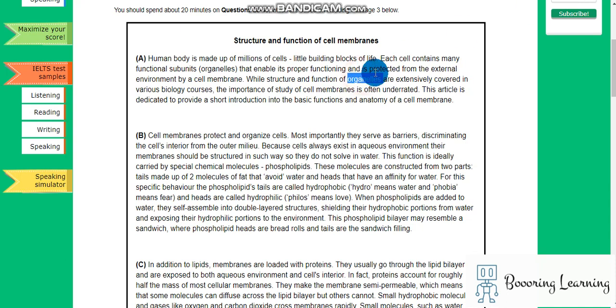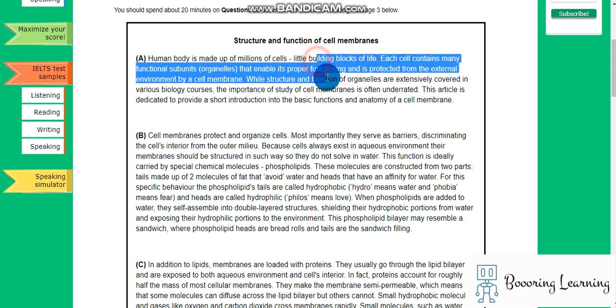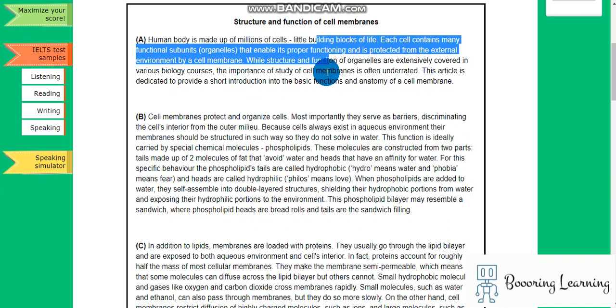Hi, hello, it is IAS academic reading section 3, structure and function of cell membranes. I love biology. The human body is made of millions of cells, little building blocks of life. Each cell contains many functional subunits that enable its proper functioning and is protected from the external environment by a cell membrane. While structure and function of organelles are extensively covered in various biology courses, the importance of study of cell membranes is often underrated. This article is dedicated to provide a short introduction into the basic functions and anatomy of a cell membrane.